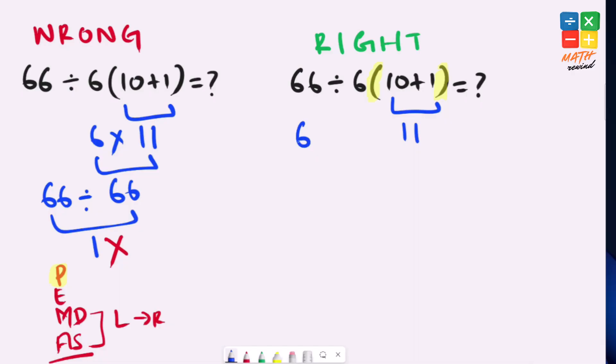Our expression simplifies to 66 divided by 6 times 11. Here if you notice, we have division and multiplication operators available in this expression. They both have same priority, but according to the rules, we must work from left to right.